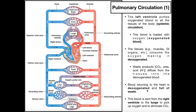Blood returning to the heart is deoxygenated — it has much less oxygen and is full of waste like carbon dioxide. It comes back specifically to the right atrium. There are a few major vessels that lead to the right atrium: blood returning from the upper body — the arms and head and brain — returns via the superior vena cava. All blood returning from the lower extremity, anything below the heart, returns via the inferior vena cava to the right atrium.